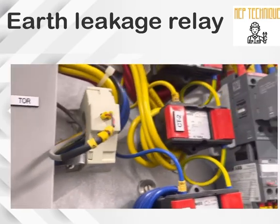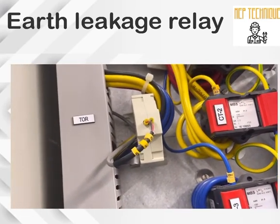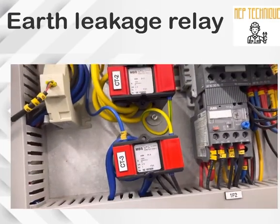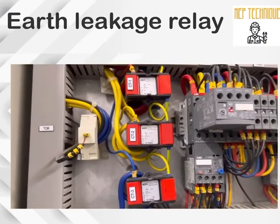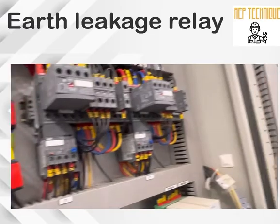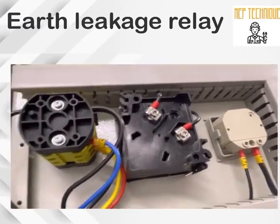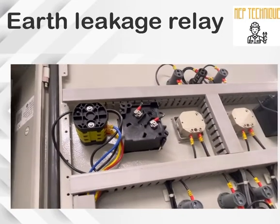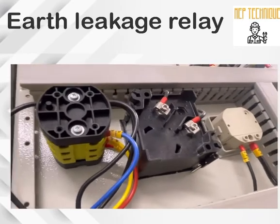On the right side of the CBCT, there is a CT — current transformer. A current transformer is a measuring instrument; we can use it to measure current, and it is connected with the ammeter — you can see it here. For R phase, Y phase, and B phase, there are three CTs installed in the panel so we can measure the current.